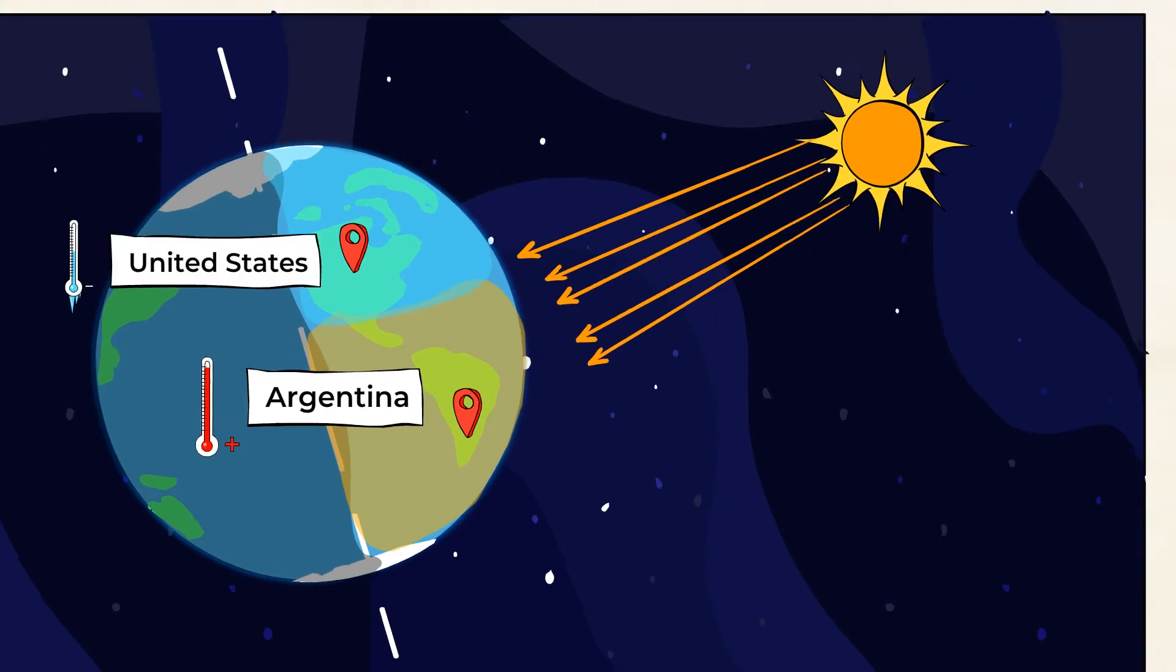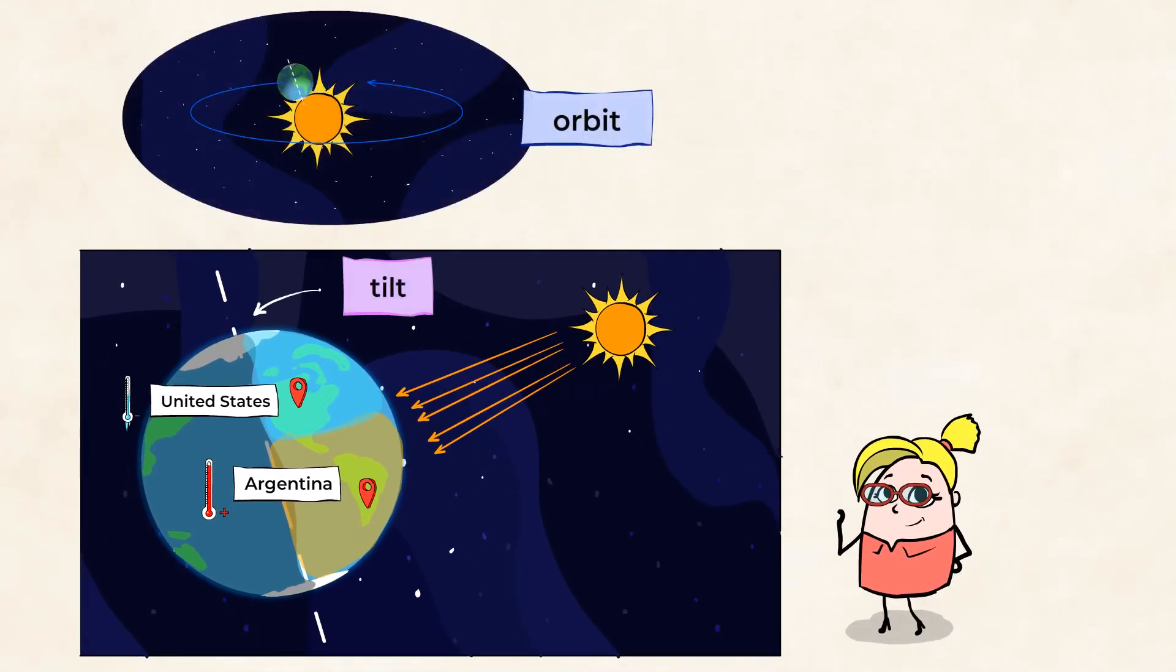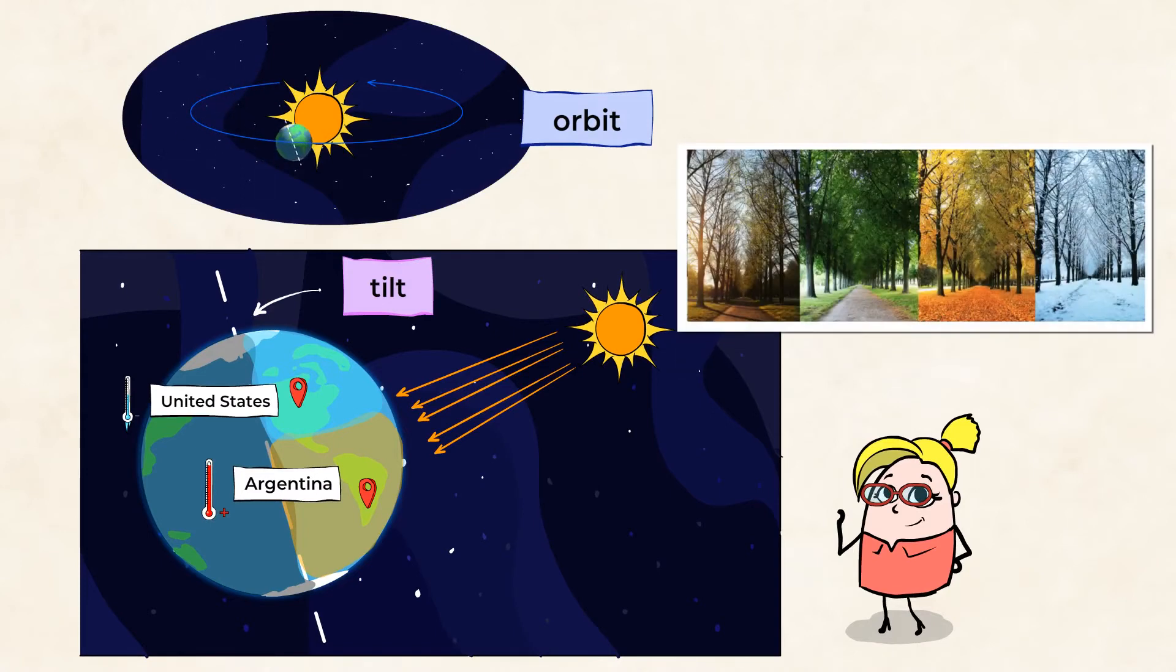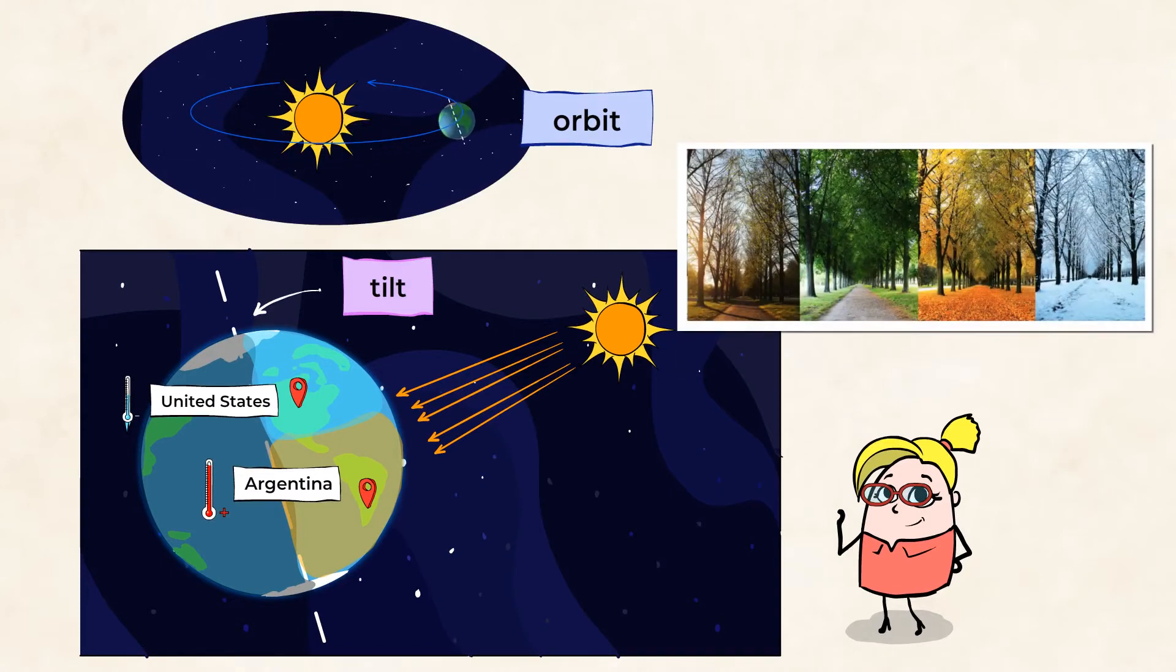So you see, tilt and orbit are what cause some parts of the world to experience different seasons. Chen did not consider this when planning for his trip to the other side of the world. Oh well, I bet I'll plan better next time.